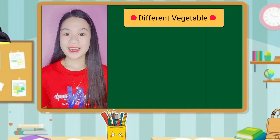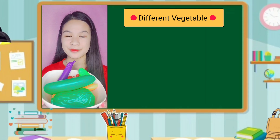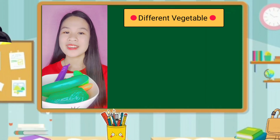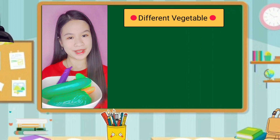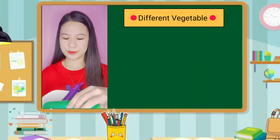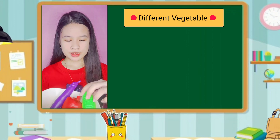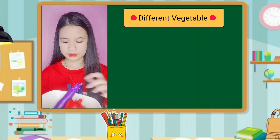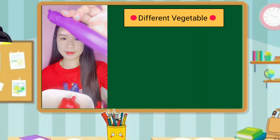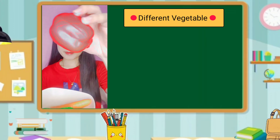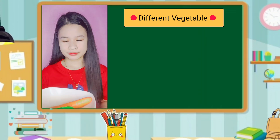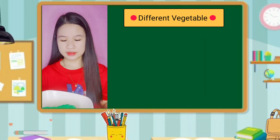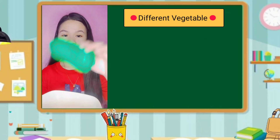I have here 6 different vegetables with 6 different names. We have cucumber, bitter melon, eggplant, bell pepper, carrots, and cabbage.